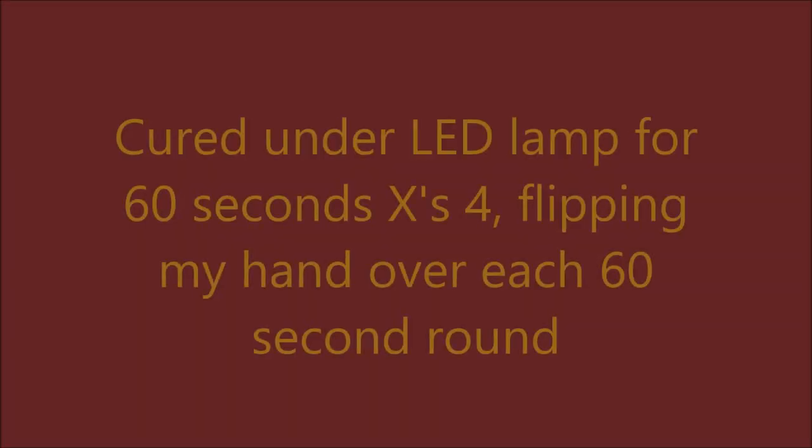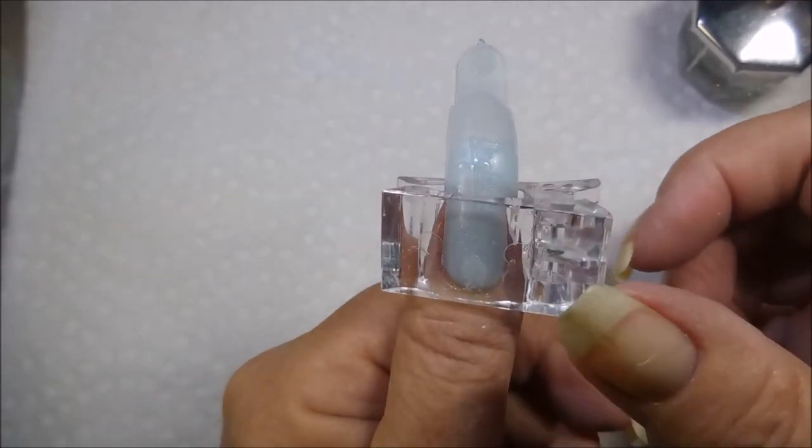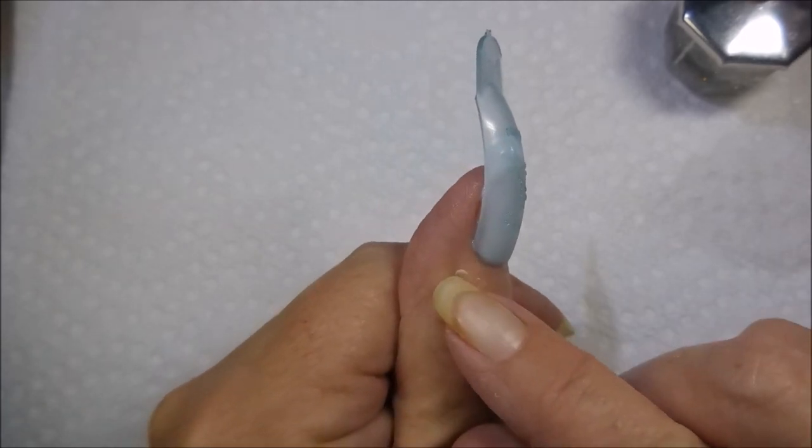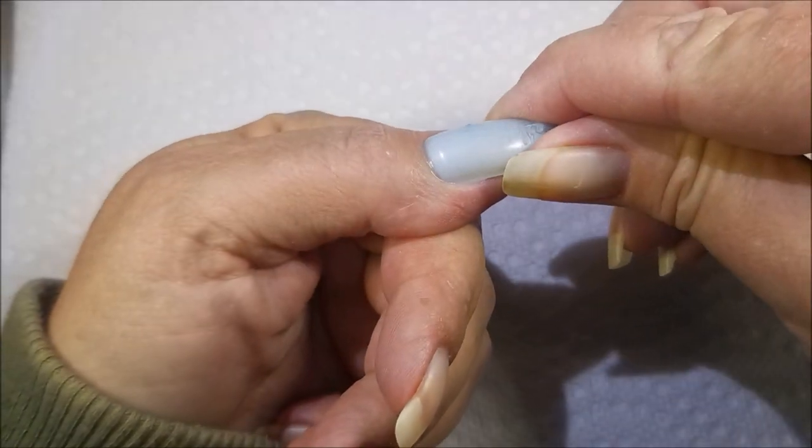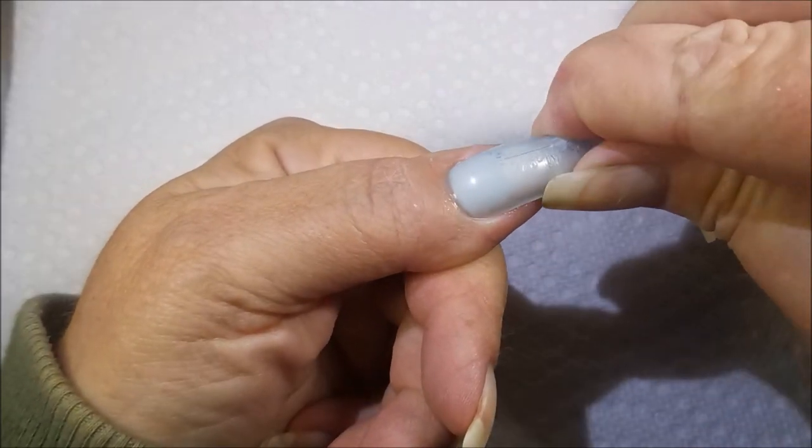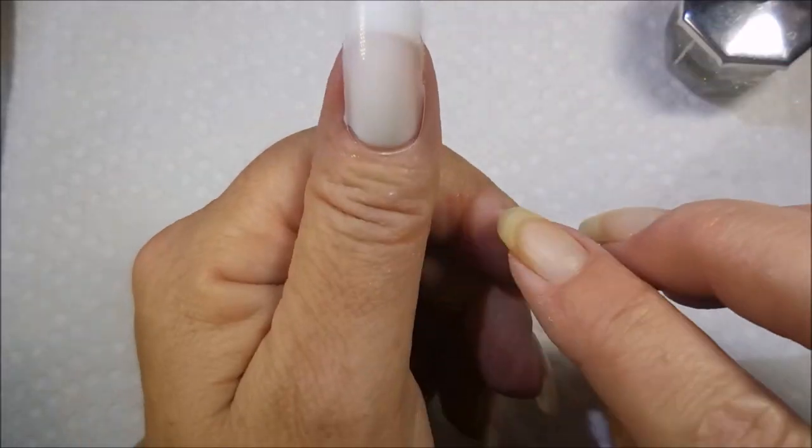And here we go. We're going to cure it. I'm curing mine under an LED lamp for 60 seconds times 4. And I flip my nail each time like I do. And I got a little bit on my skin. And we are going to pop this off. But I cured it for 60 seconds and then flipped my nail upside down 60 seconds. Flipped it back 60 seconds and then back again 60 seconds.